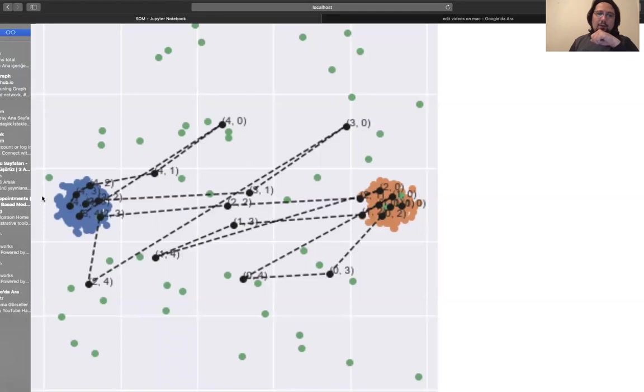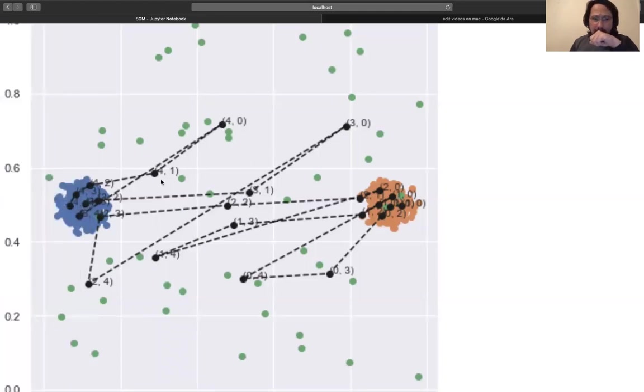And our grid, our network, is also one cluster. Four three cluster goes this way. Two zero classes go that way, and we have other neurons here in between.